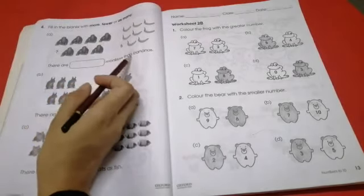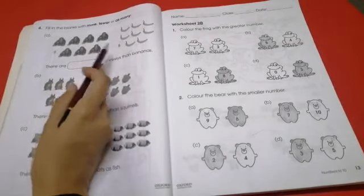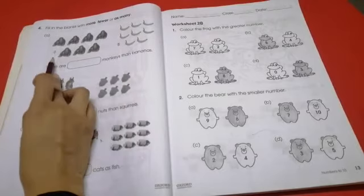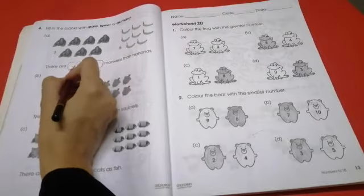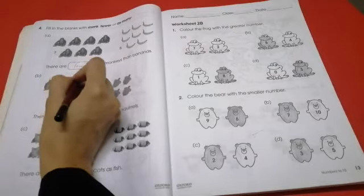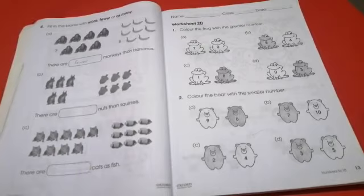There are dash monkeys then bananas. Is it less or less? 8 or 7. Monkeys 7 are bananas 8. So 7 fewer. Fewer. This way, you will solve it. Next, you will solve it.